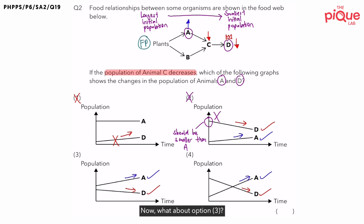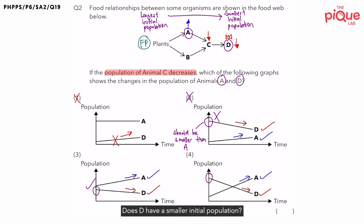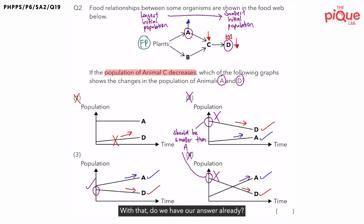What about option three? Does D have a smaller initial population? Yes, so three is possible. What about number four? Does D have a smaller initial population? No, so option four is also out because it should be smaller than A. With that, the correct answer should be option three.